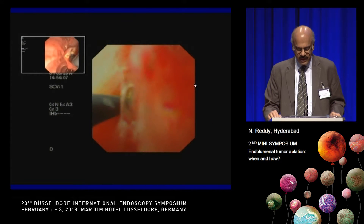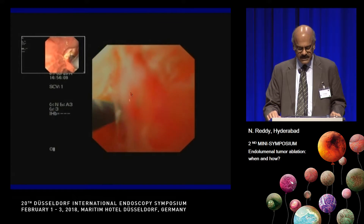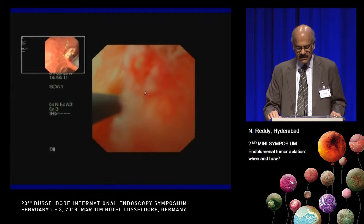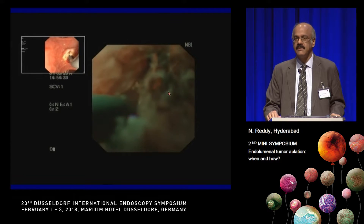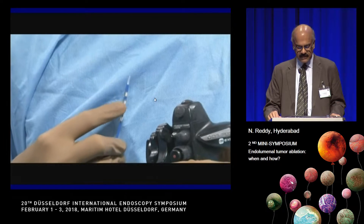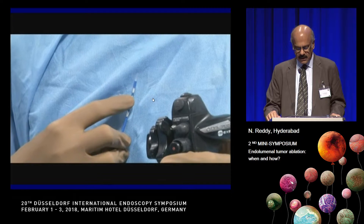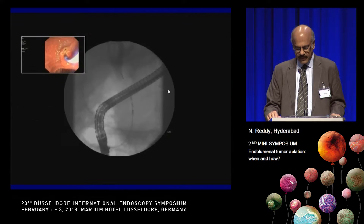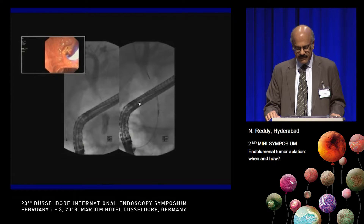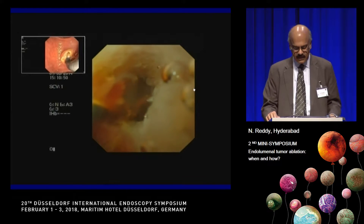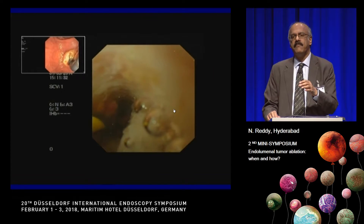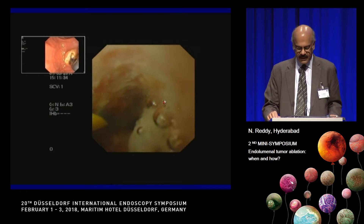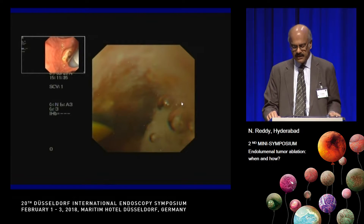This video shows the cholangioscopic picture of a hilar tumor — classic cholangiocarcinoma with narrowband imaging showing very prominent vessels. We then subject this patient to RFA, and when we go back with the cholangioscope you can see a very white eschar, similar to what you see after Barrett's ablation. The tumors are already seen to be opening up.